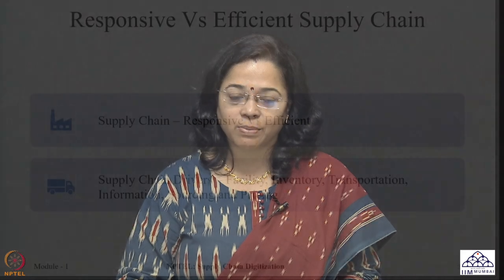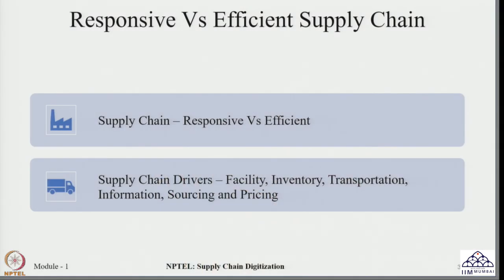If you remember from our last discussions, we had a brief discussion about the differences between responsive and efficient supply chains. We have seen the different characteristics and expectations from customers which can be fulfilled through different types of supply chains — in terms of their strategy and behaviour — and how they need to be designed to be responsive or efficient in terms of costs.